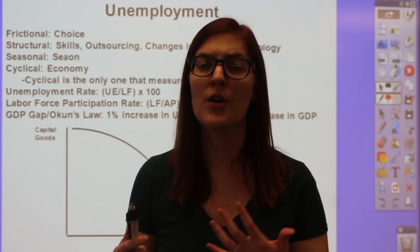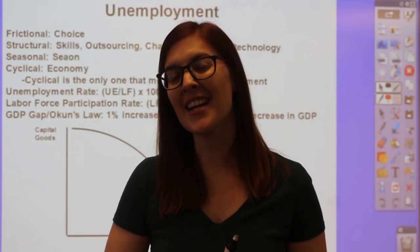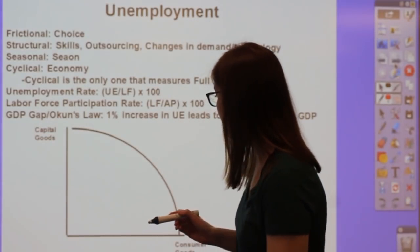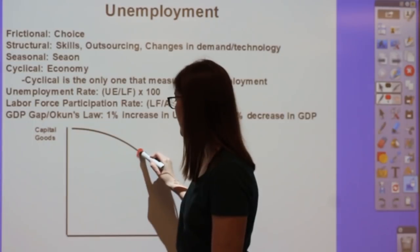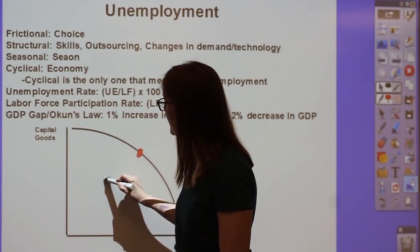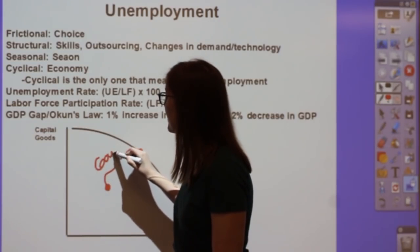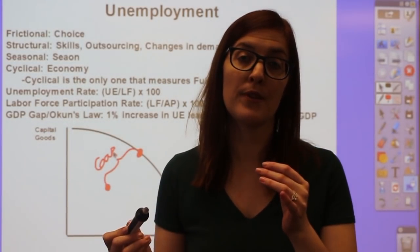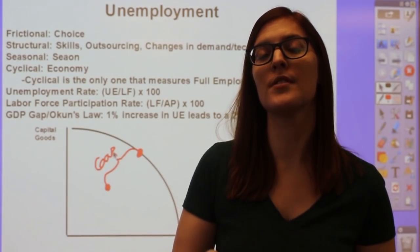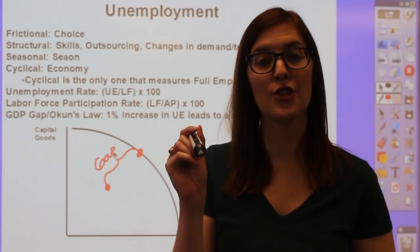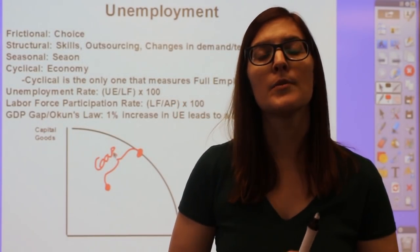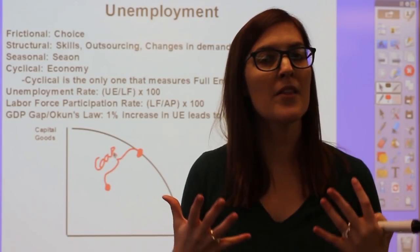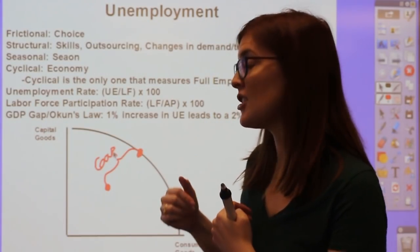Relating to the PPC graph from Unit 1, the GDP gap is the difference between full-employment output and actual output during a recession. We measure this gap using Okun's Law, which states that for every one percentage point increase in unemployment, there is a 2% decrease in GDP. This illustrates the inverse relationship between unemployment and GDP, and shows how unemployment has a huge impact on whether we are in a recession.